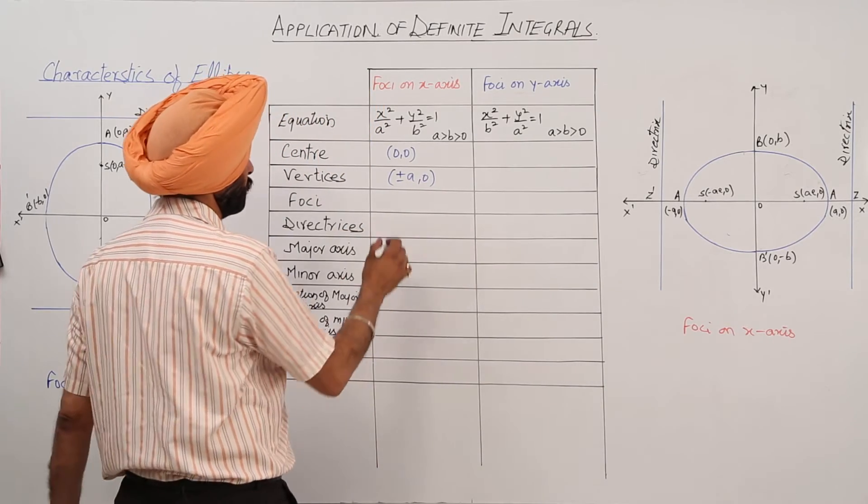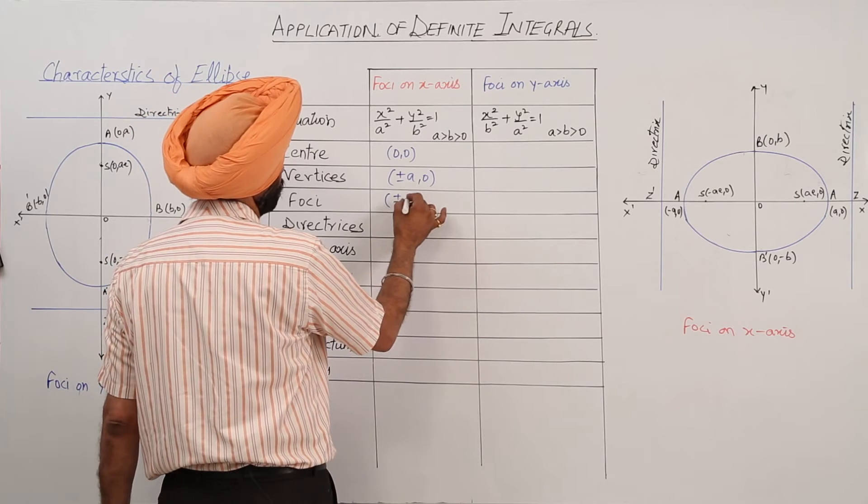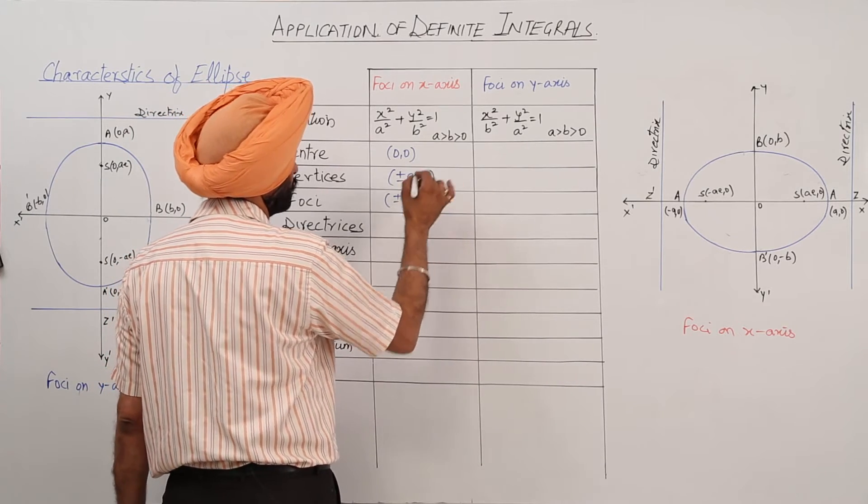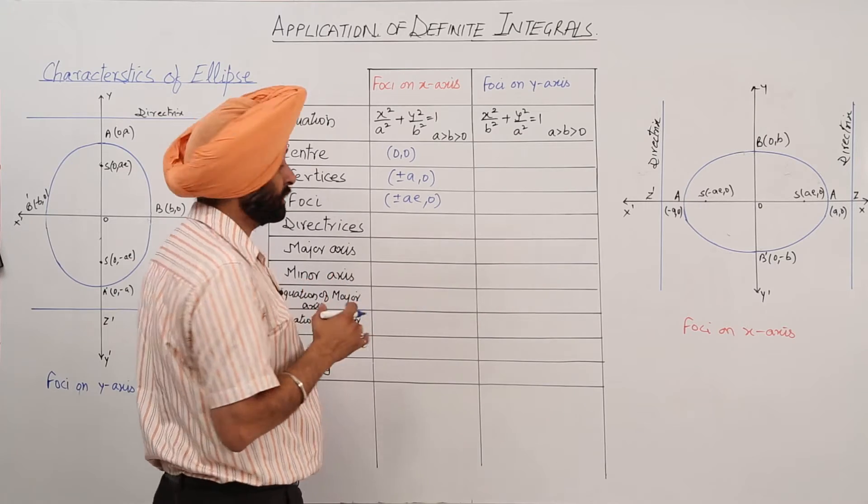Foci: plus minus ae, 0, where e is what? Eccentricity.